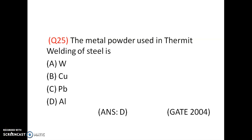Question number 25. The metal powder used in thermite welding of steel is — options: tungsten and copper, lead, aluminium. In thermite welding, aluminium is used. Option D is correct.